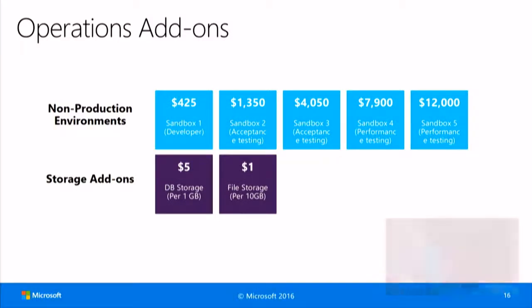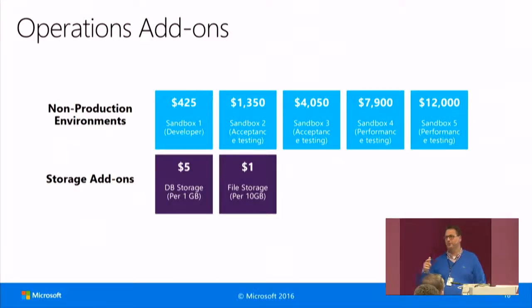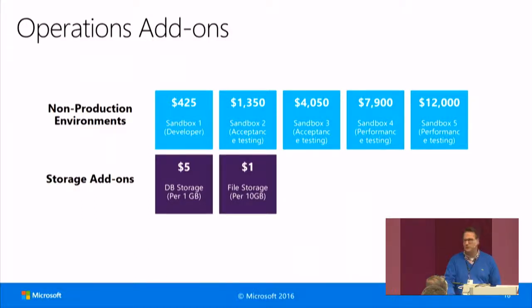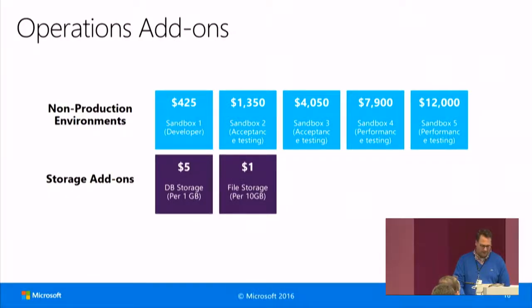Talking about sandboxes, we do have five of them. It starts with Sandbox One and Two, which are already included in your Operations subscription. If you need additional sandboxes, you can get them for $4,250 or $13,500 a month, ending up with Sandbox Five for performance testing at $12,000 a month. That's usually something you only need for a limited time — not months or a year. Compared to what you might need to test in a current 2012 or AX 2009 environment, it's a pretty good bargain.